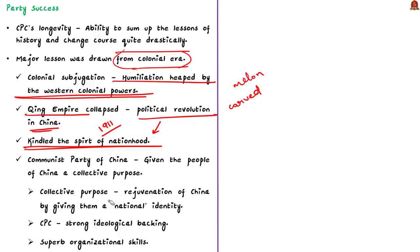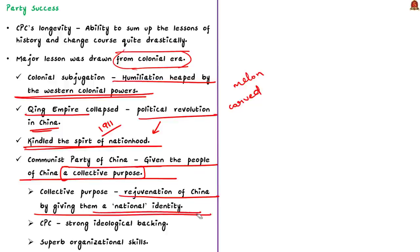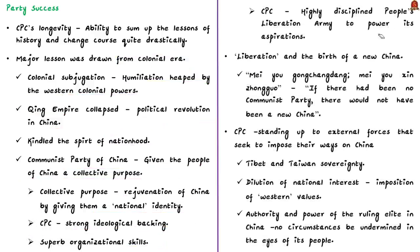The party used this lesson effectively and accomplished victory during many crises. During such crises, the Communist Party of China gave the people a collective purpose, leading to the rejuvenation of China by giving them a national identity. The party had strong ideological backing and superb organizational skills. It made use of the highly disciplined People's Liberation Army to power its aspirations, which helped it bring about a social revolution that demolished an entire social class — seen as the liberation and birth of a new China.